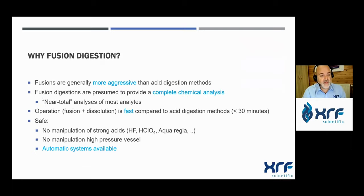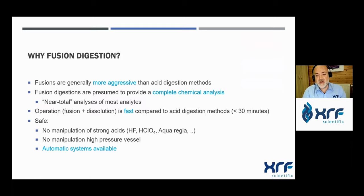Fusion digestion is generally more aggressive than acid digestion and provides a complete chemical analysis — what we call near-total analysis of most analytes. The operation — fusion plus dissolution — is fast compared to some acid digestions, typically below 30 minutes. It is also safer because there is no manipulation of strong acids requiring specific environments like perchloric or hydrofluoric acid, no use of high pressure vessels, and the complete sample preparation can be automated.